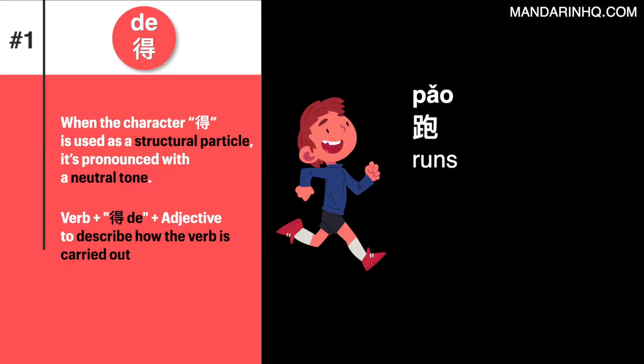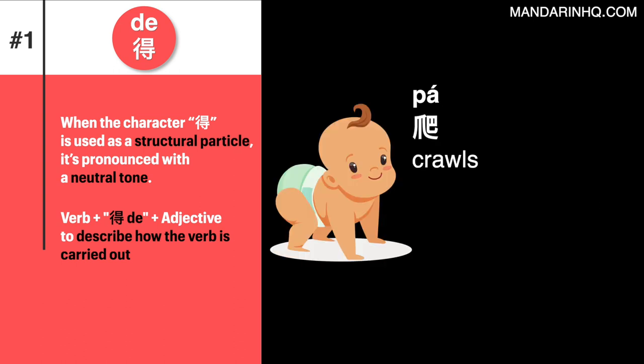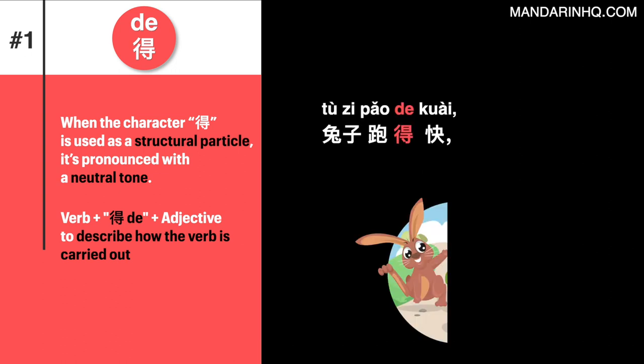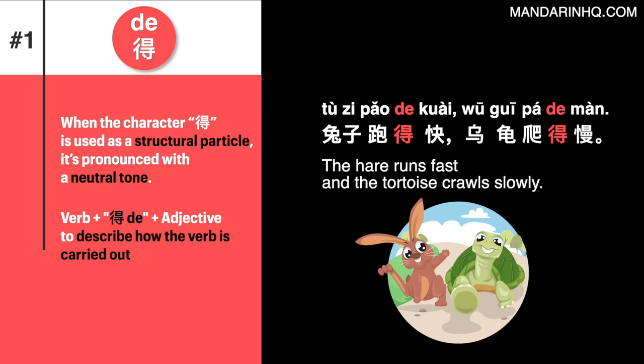You add 得 between a verb and an adjective to describe how the verb is carried out. For example: 跑 (run), 跑得快 (runs fast); 爬 (crawl), 爬得慢 (crawls slowly). 兔子跑得快，乌龟爬得慢 — The hare runs fast, and the tortoise crawls slowly.